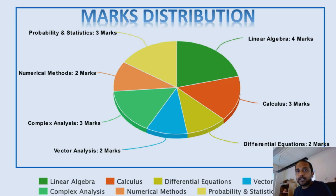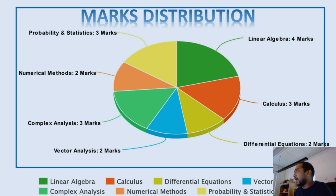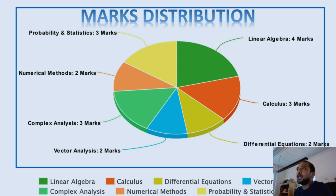Now let's look at the topic-wise marks distribution of the 15 marks within engineering math. Linear algebra appears for a maximum of four marks, calculus for three marks, differential equations for two marks, vector analysis for two marks, complex analysis for three marks, numerical methods for a maximum of two marks, and probability and statistics for three marks.